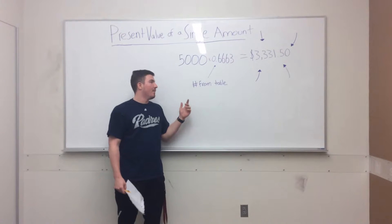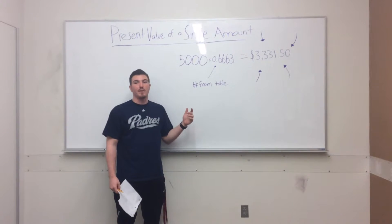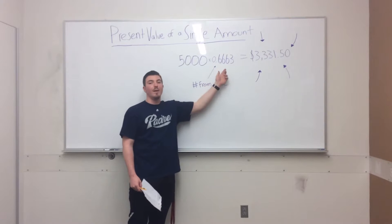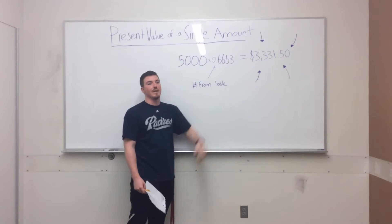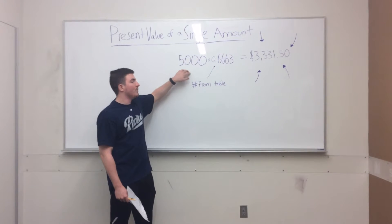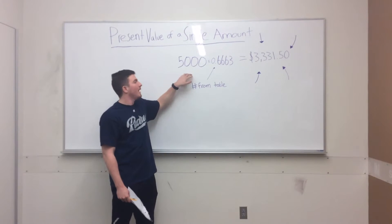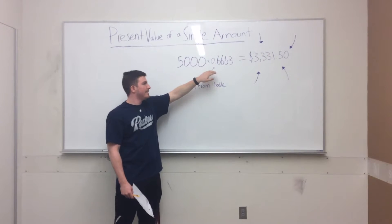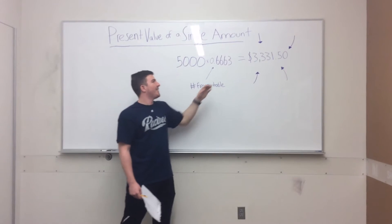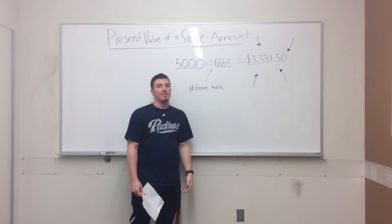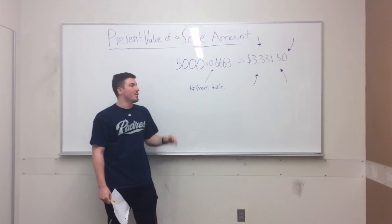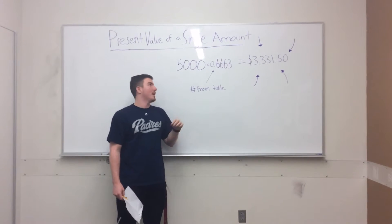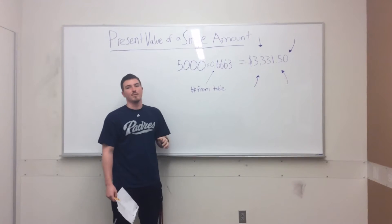After finding the intersection of six years and 7% interest, we get 0.6663. We take our future value of $5,000 and multiply that by 0.6663. We're going to get $3,331.50 — that's the amount that, if invested today, would give us $5,000 in the future.